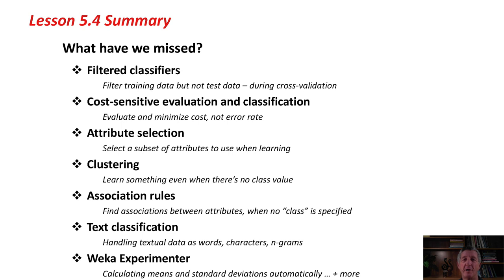There's a whole panel on the Weka Explorer for attribute selection, which helps you select a subset of attributes to use when learning. In many situations, it's really valuable, before you do any learning, to select an appropriate small subset of attributes to use. There are a lot of clustering techniques in Weka. Clustering is where you want to learn something even when there's no class value — you want to cluster the instances according to their attribute values. Association rules are another kind of learning technique where we're looking for associations between attributes — no particular class, but looking for any strong associations between any of the attributes. That's another panel in the Explorer.